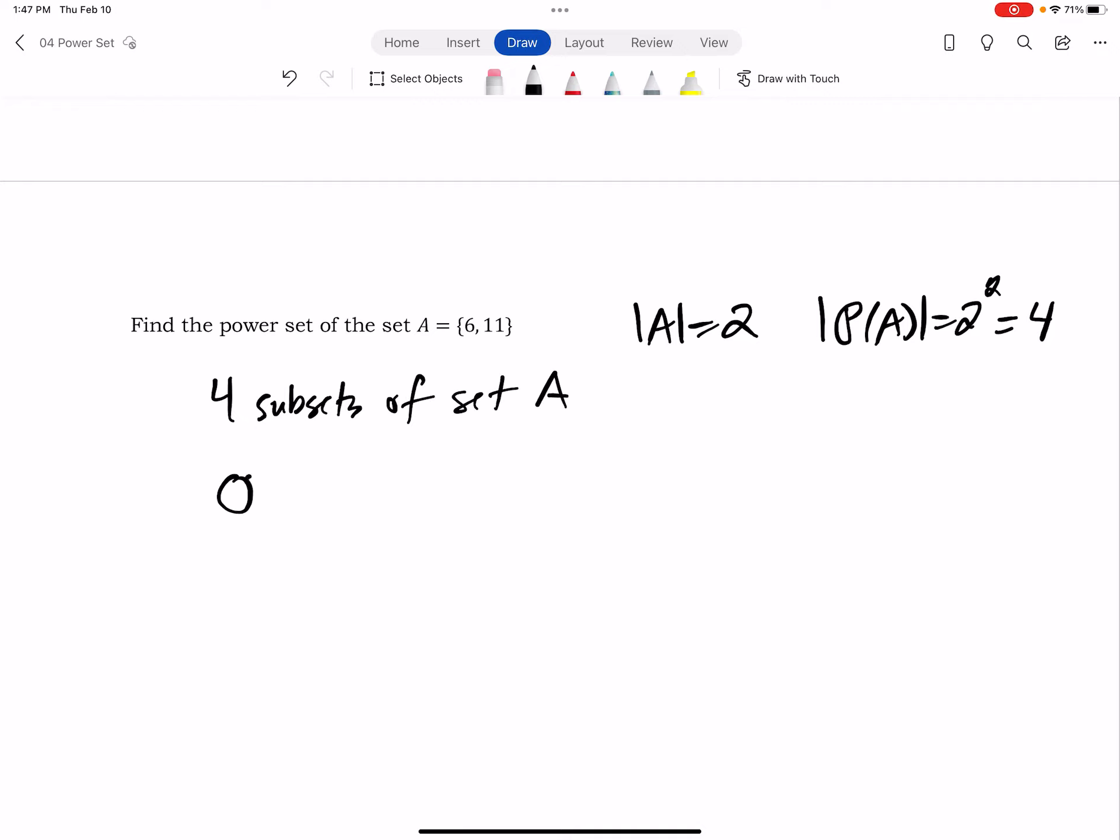So there are four subsets of set A. We could do the empty set where we don't choose either of the elements. We could do the set containing 6 or the set containing 11, where we just choose one of the elements. And then we could do the set where we choose them both.